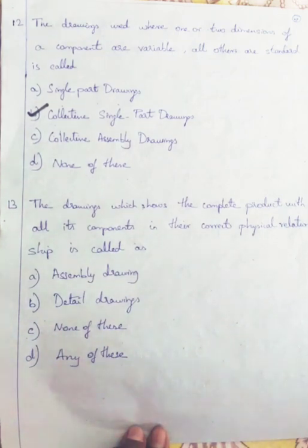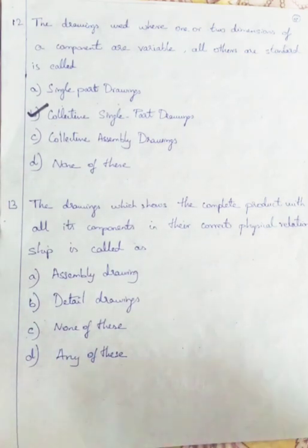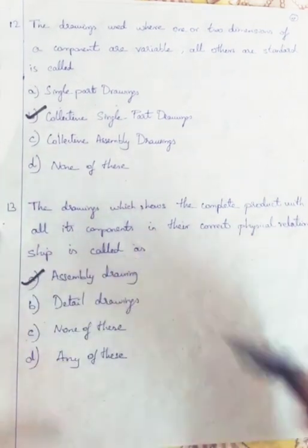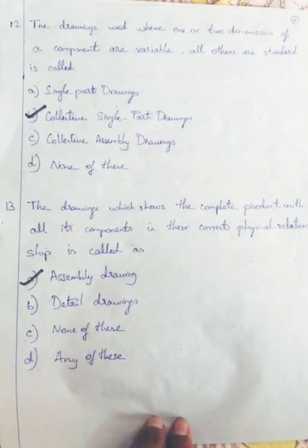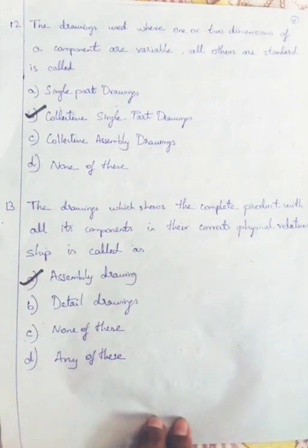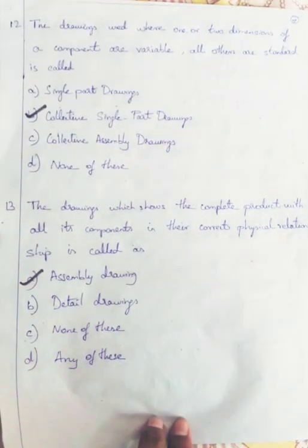Question 13: The drawings which show a complete product with all its components in their correct physical relationship are called Assembly Drawings. Detail drawings show how to make a single part, but assembly drawings show the physical relationship — how parts should be joined, such as how a shaft fits inside a hole.